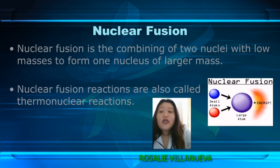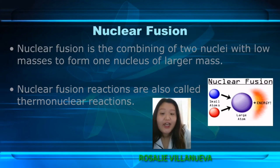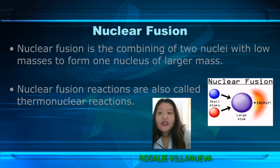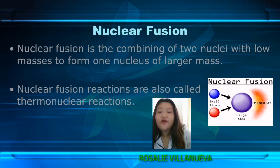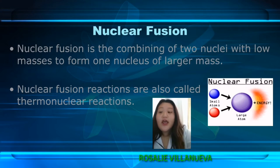Fusion is the process by which the sun and other stars generate light and heat. It's most easily achieved on Earth by combining two isotopes of hydrogen — deuterium and tritium. Hydrogen is the lightest of all the elements, being made out of a single proton and electron.